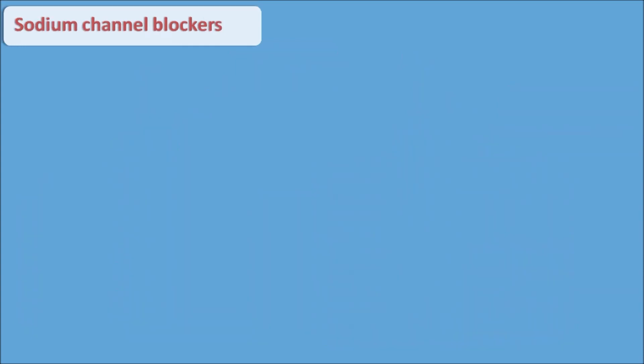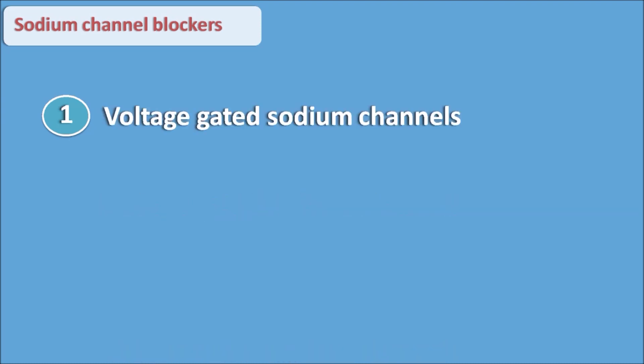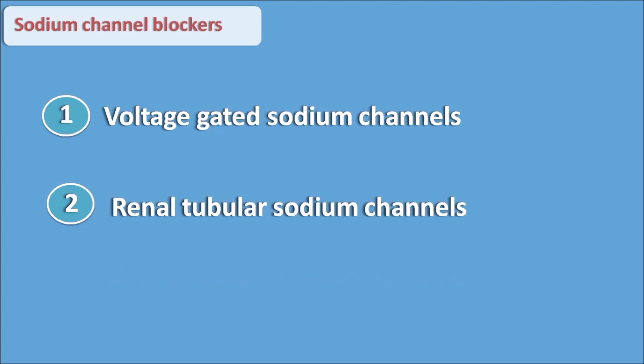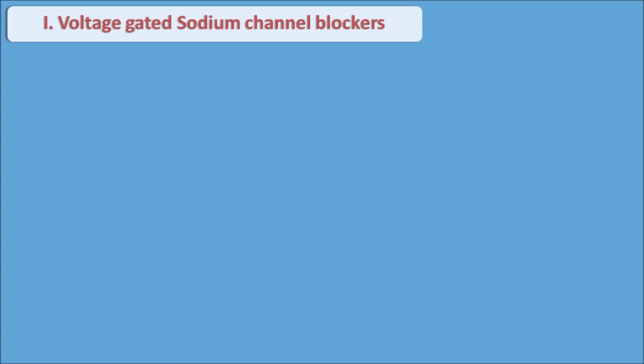Now we will see the different types of sodium channel blockers. Sodium channel blockers can be classified based on the drugs acting on different types of sodium channels. The first type is voltage-gated sodium channels, and the second type is renal tubular sodium channels. Drugs mainly act on these two types of sodium channels.